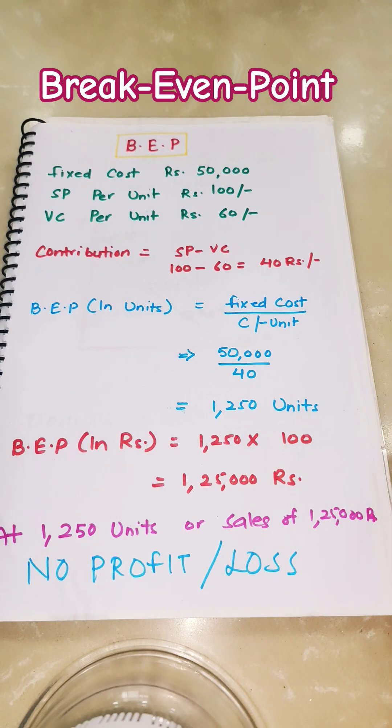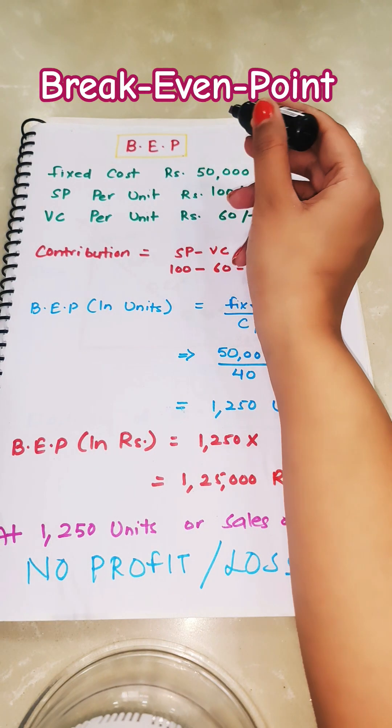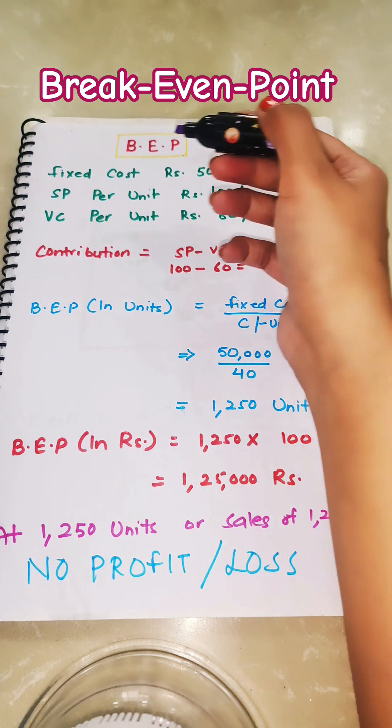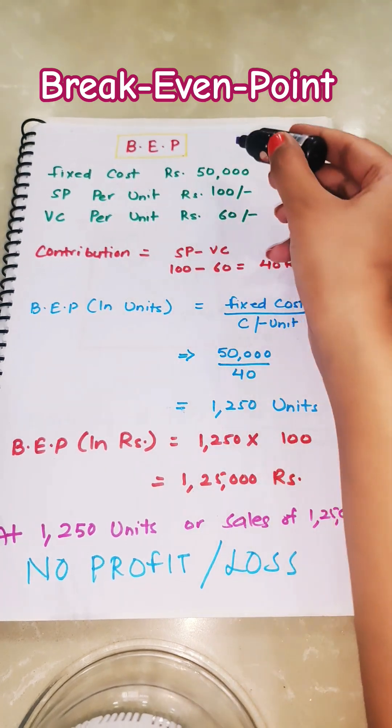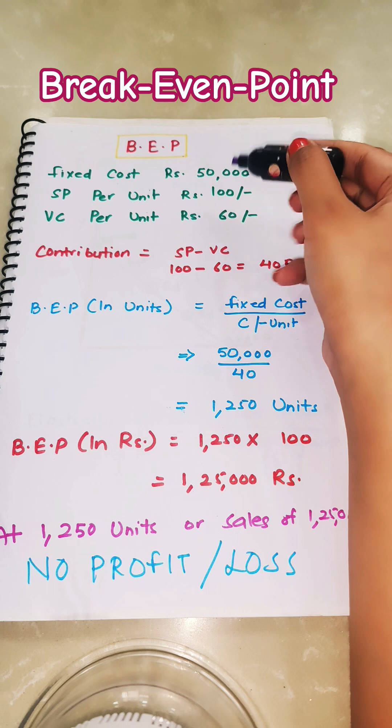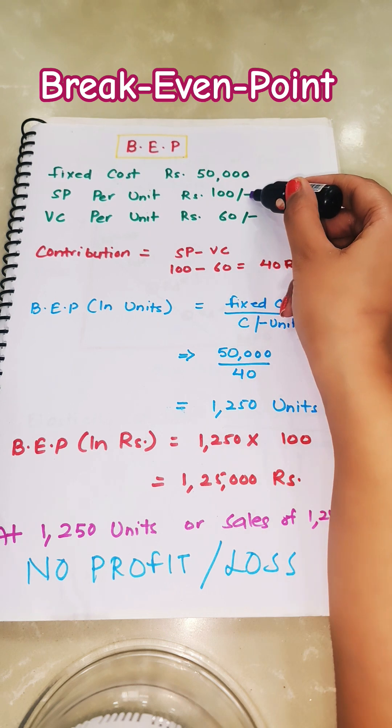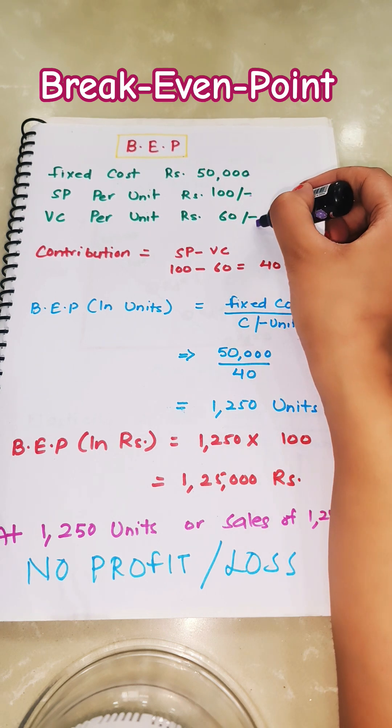Hello students, here we have to calculate break-even point with the given information. The information we have: fixed cost is Rs. 50,000, selling price per unit Rs. 100, and variable cost per unit Rs. 60.